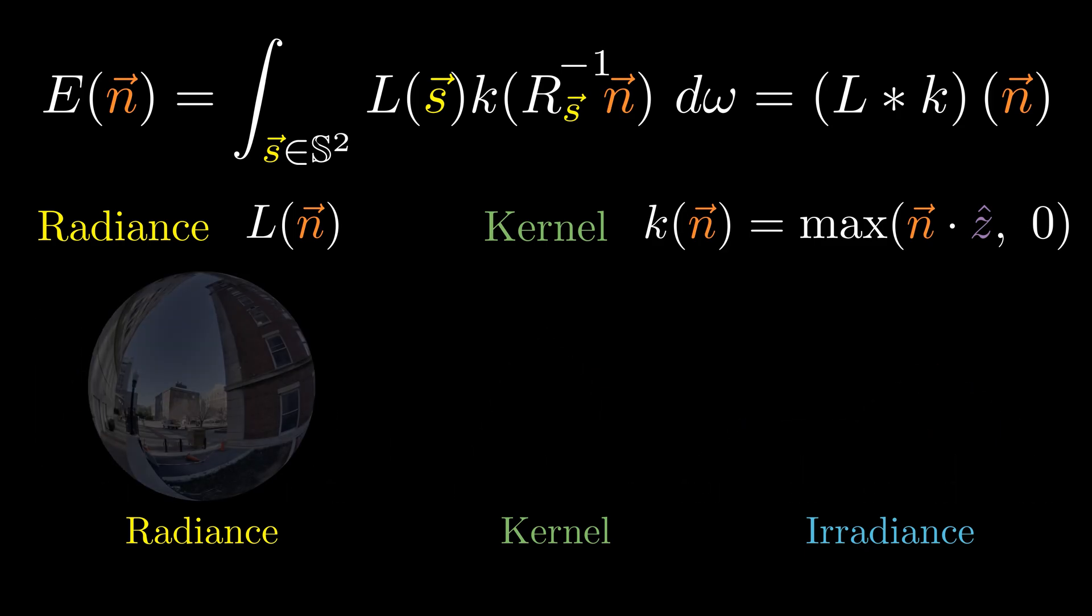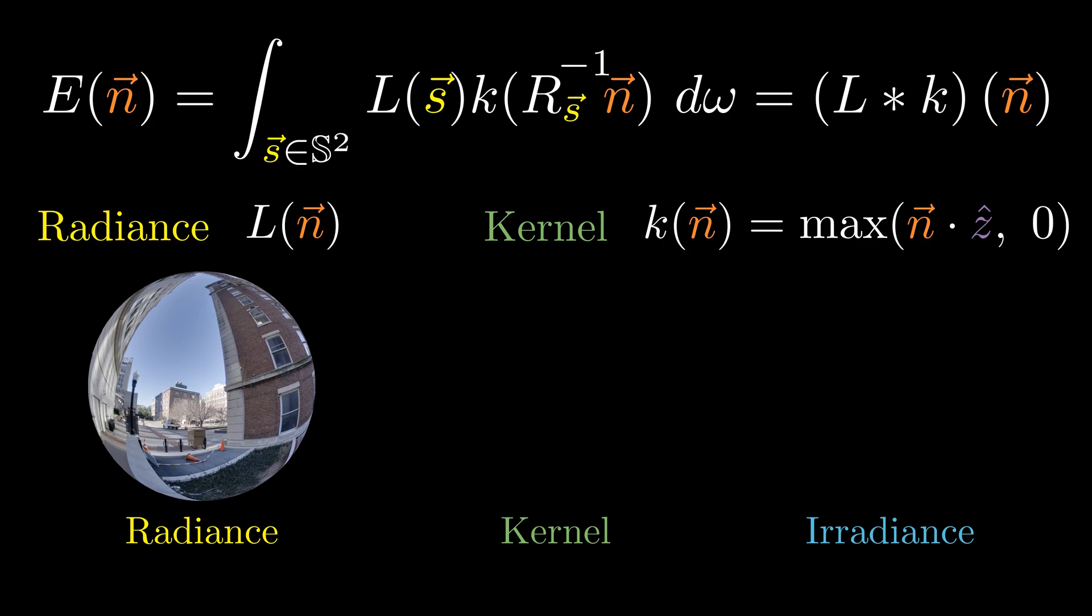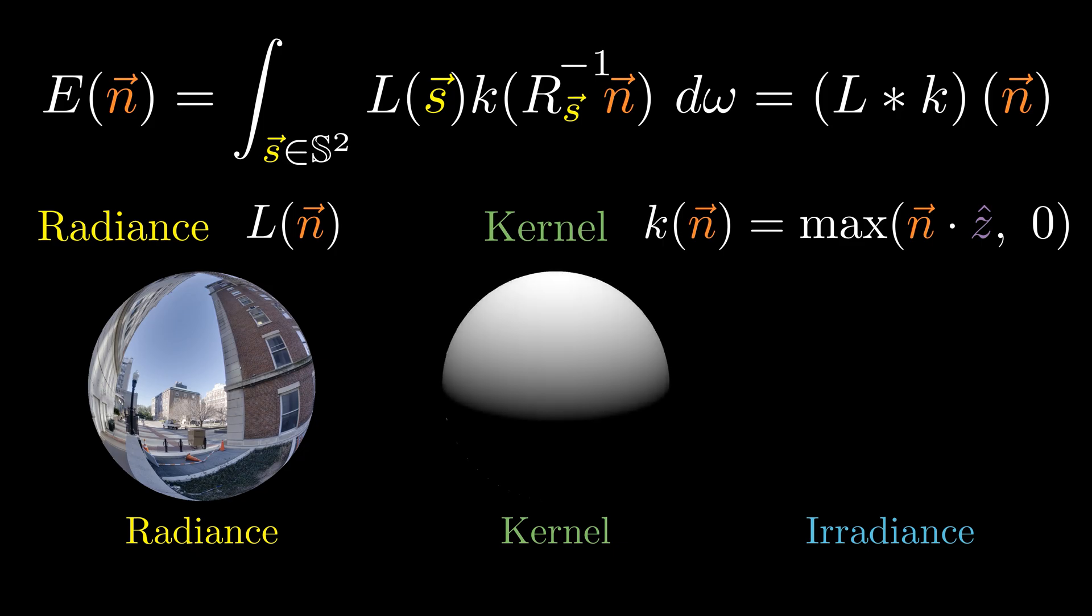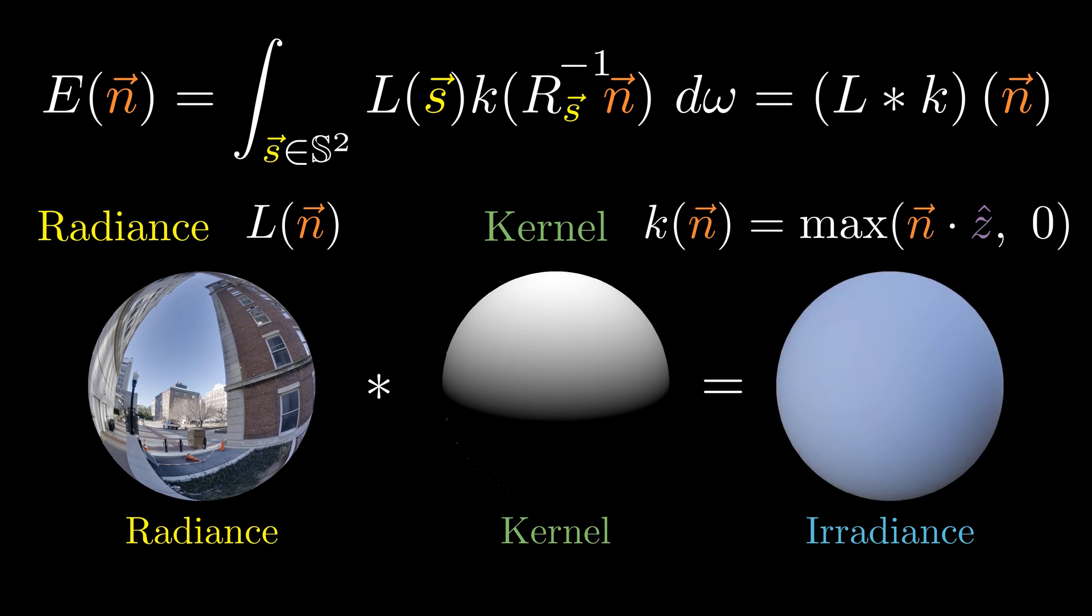Now let's move to a 2D example. Here we have a fisheye image that captures the radiance in all directions, essentially a projection of the environment onto a hemisphere. We apply the same cosine shape kernel K. By convolving the radiance with the kernel across the hemisphere, we generate an irradiance map. Orienting the solar panel at this direction harvests the most energy.